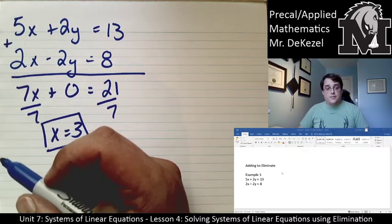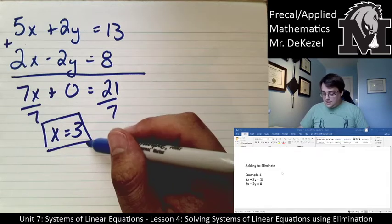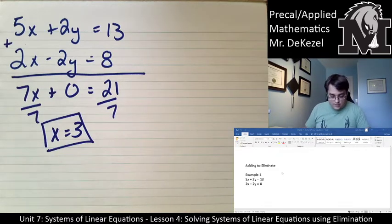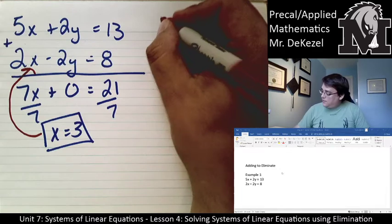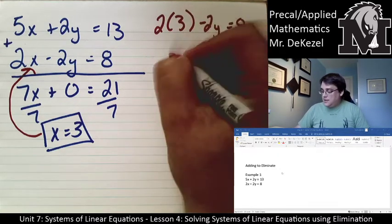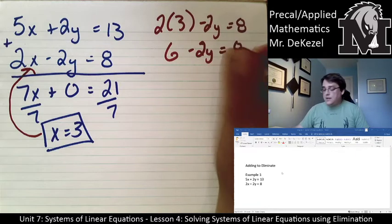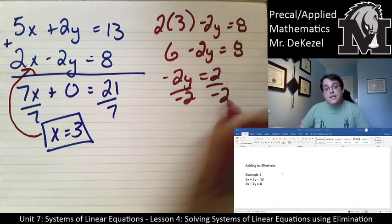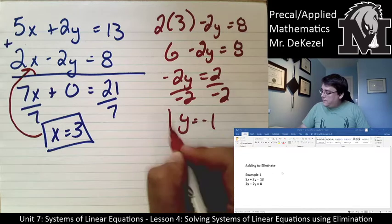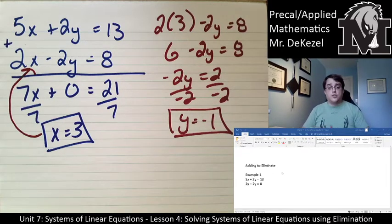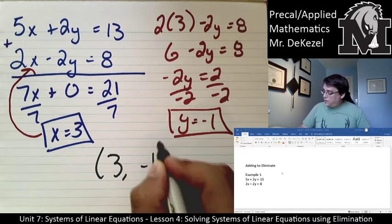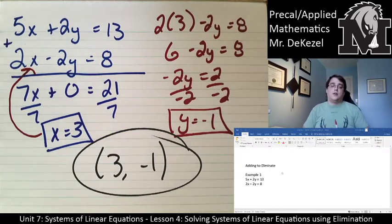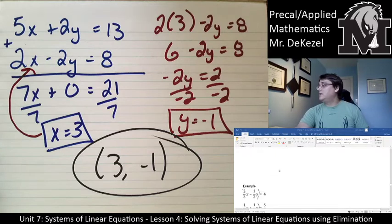Adding or subtracting to eliminate works no problem. I take x = 3 and plug it into the bottom equation: 2(3) − 2y = 8, so 6 − 2y = 8. Subtracting 6 from both sides: −2y = 2, divide both sides by −2, y = −1. Our solution is (3, −1).